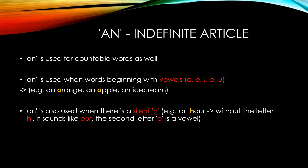The indefinite article 'AN' is used before words beginning with vowels. Vowels are A, E, I, O, U. For example, an orange, an apple, and an ice cream.